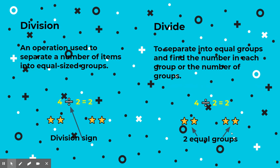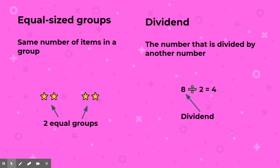To divide means to separate into equal groups and find the number in each group or the number of groups. Equal size groups means the same number of items in a group. So we have 4 stars broken into two equal groups of 2.